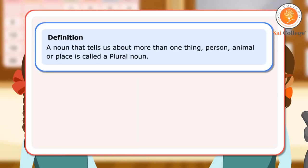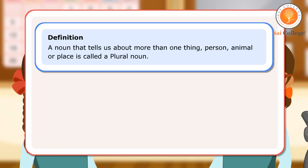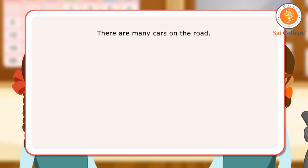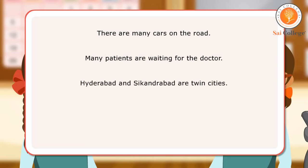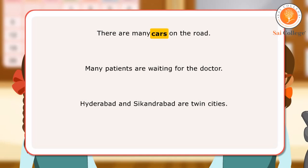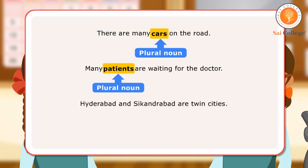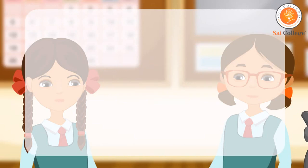Definition: A noun that tells us about more than one thing, person, animal or place is called a plural noun. Let us look at a few sentences. There are many cars on the road. Many patients are waiting for the doctor. Hyderabad and Secunderabad are twin cities. In the first sentence, cars is a plural noun as they are more than one in number. In the next sentence, patients is a plural noun. In the third sentence, cities is a plural noun as they are more than one in number.